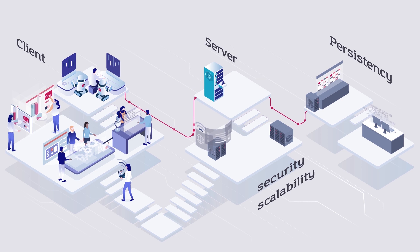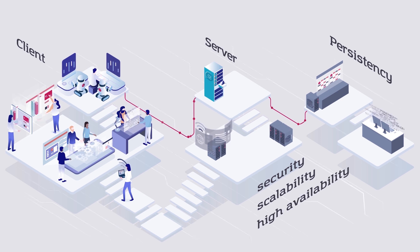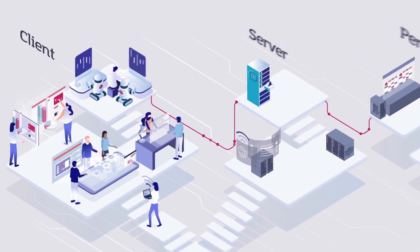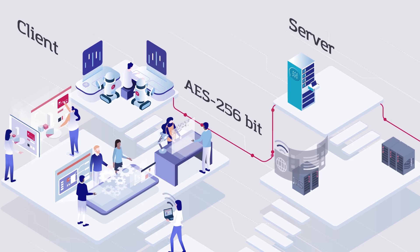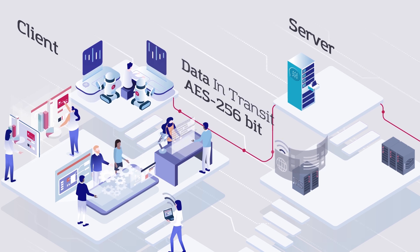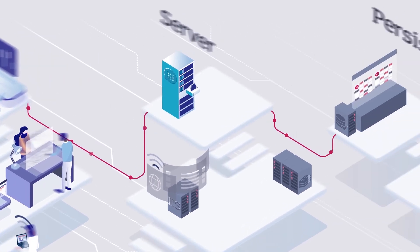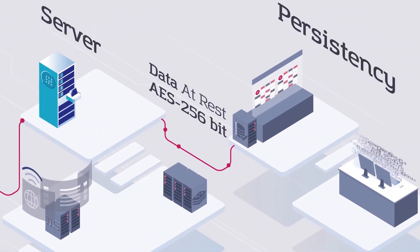This architecture allows Process Robot to offer businesses leading industry capabilities in terms of security, scalability, and high availability. Specifically, AES 256-bit encryption is used for both data in transit, as well as data at rest when stored in databases.